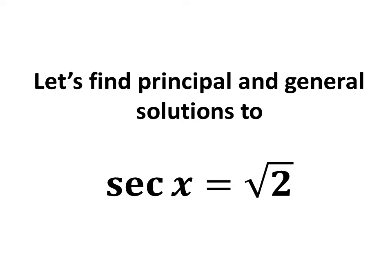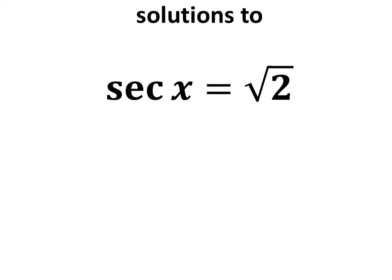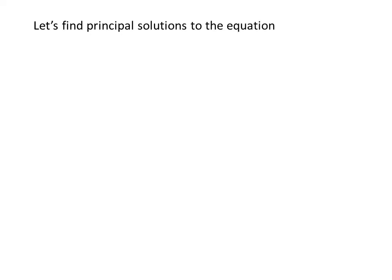In this video, we will learn to find the principal solution and general solutions to the equation secant of x is equal to square root of 2. Let us first find the principal solutions. We know the solutions to the trigonometric equation for which x is greater than or equal to 0 and less than 2π are the principal solutions.